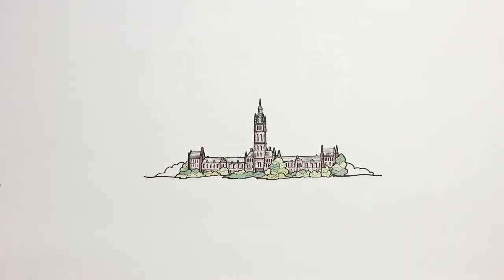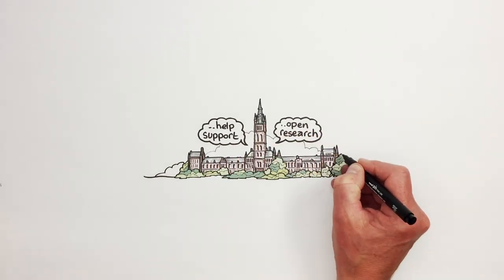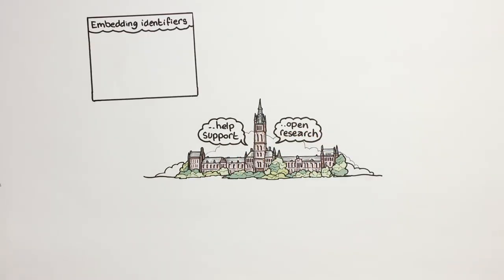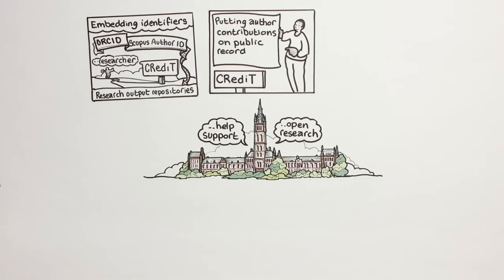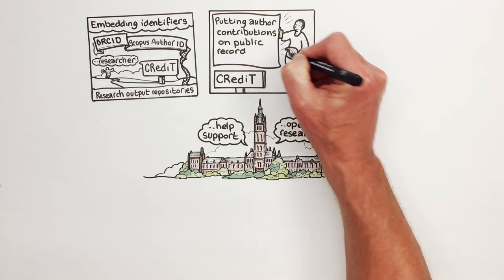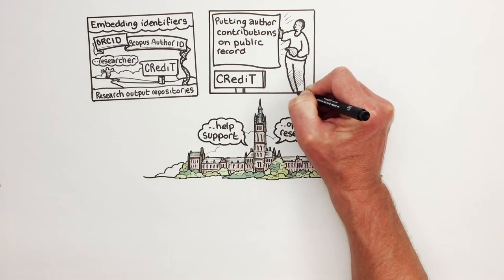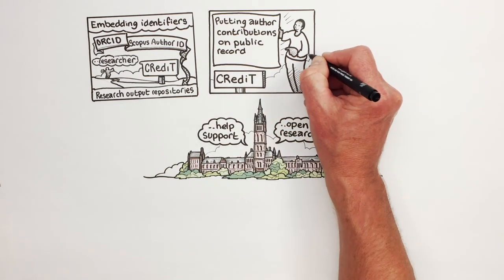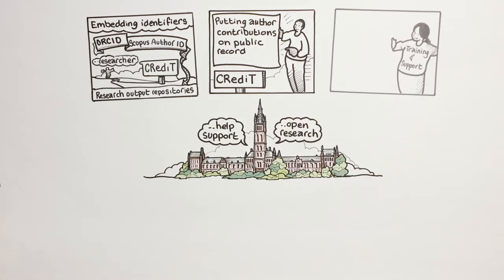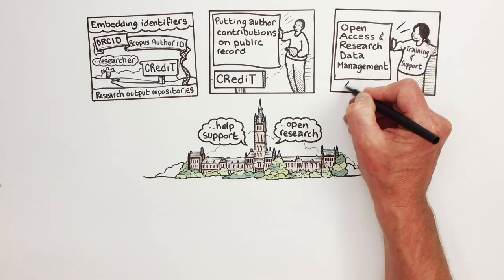The university will help to support open research by embedding identifiers such as ORCID and Scopus Author ID into our research output repositories so that credit can be traced back to the researcher. By embedding the contributor roles taxonomy, or CRediT, into our research output repository so that contributions to outputs are put on public record. By providing training and support for open access and research data management.